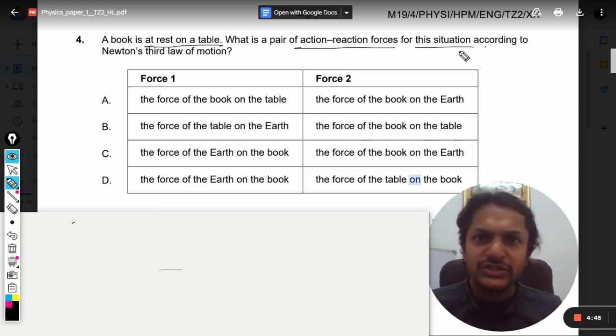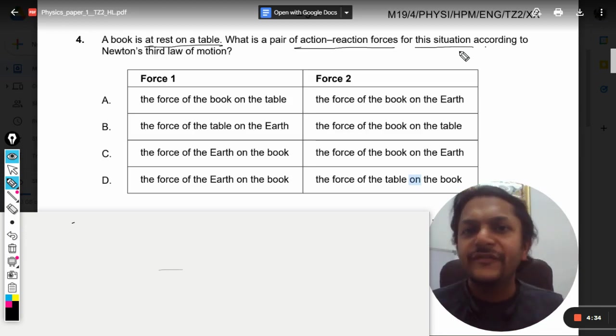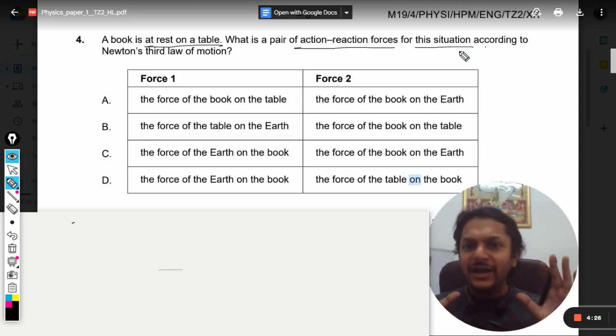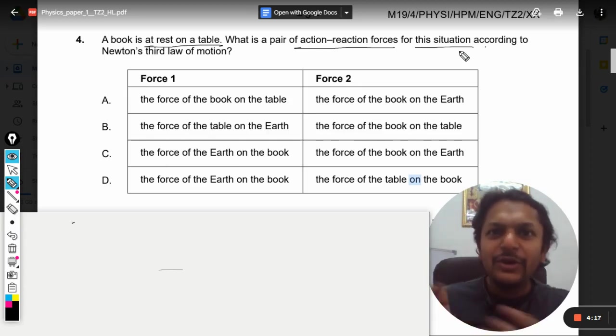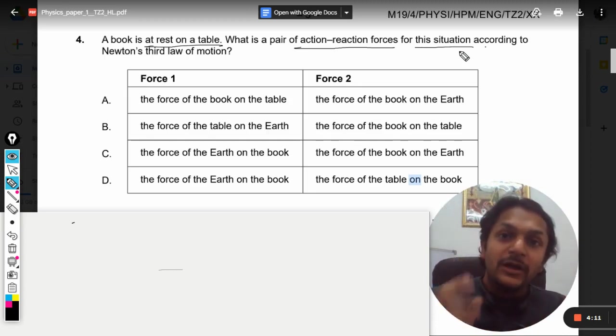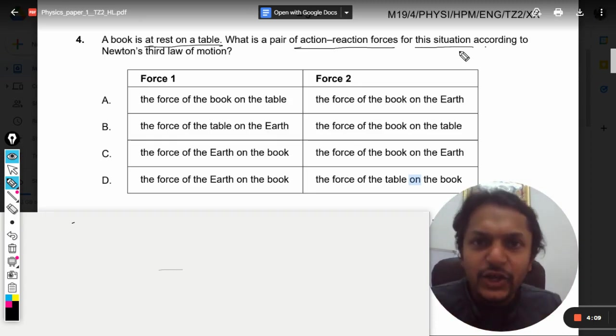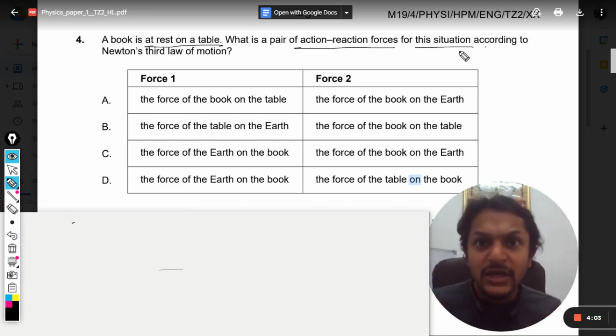Newton's third law of motion says whenever a force is applied on one body by another body, the same equal and opposite force is applied on the other body. If there is a force on body A because of B, there will be an equal and opposite force on body B because of A. So the first point to be noted is that Newton's third law is applicable on a two-body system, not a three-body system.